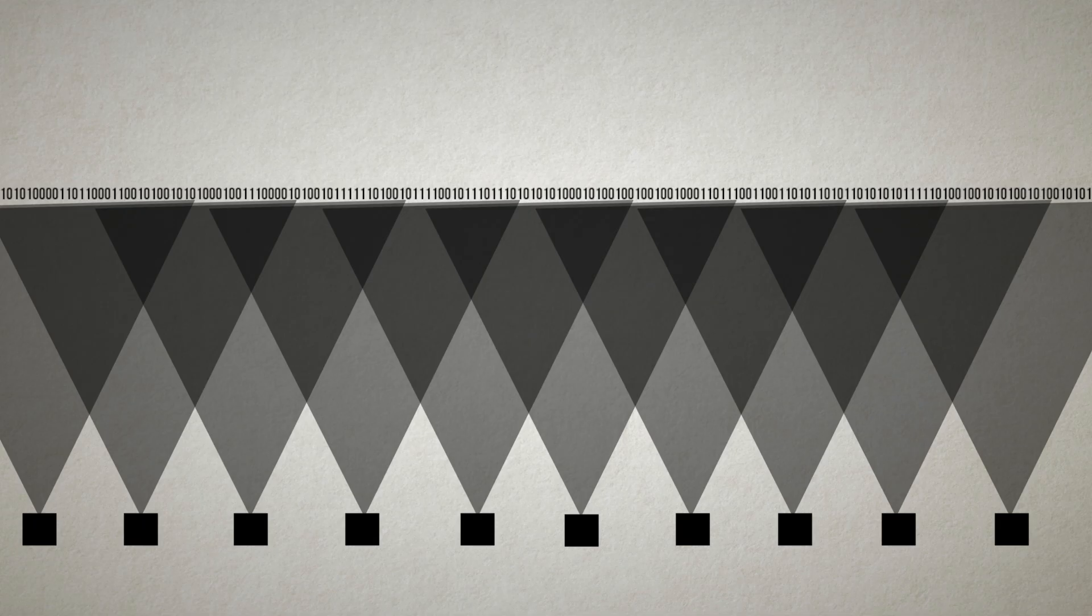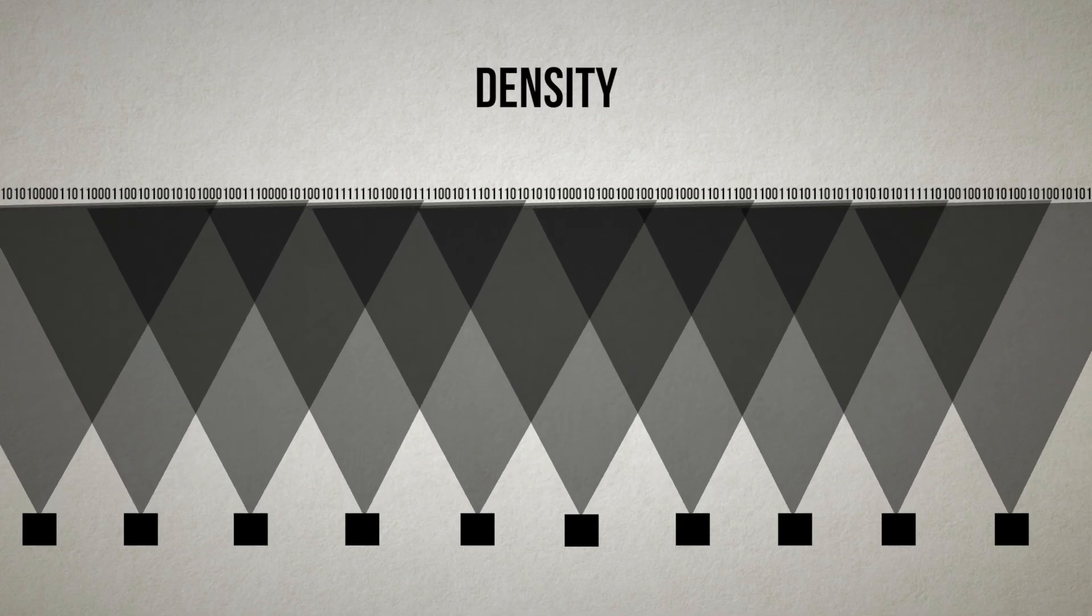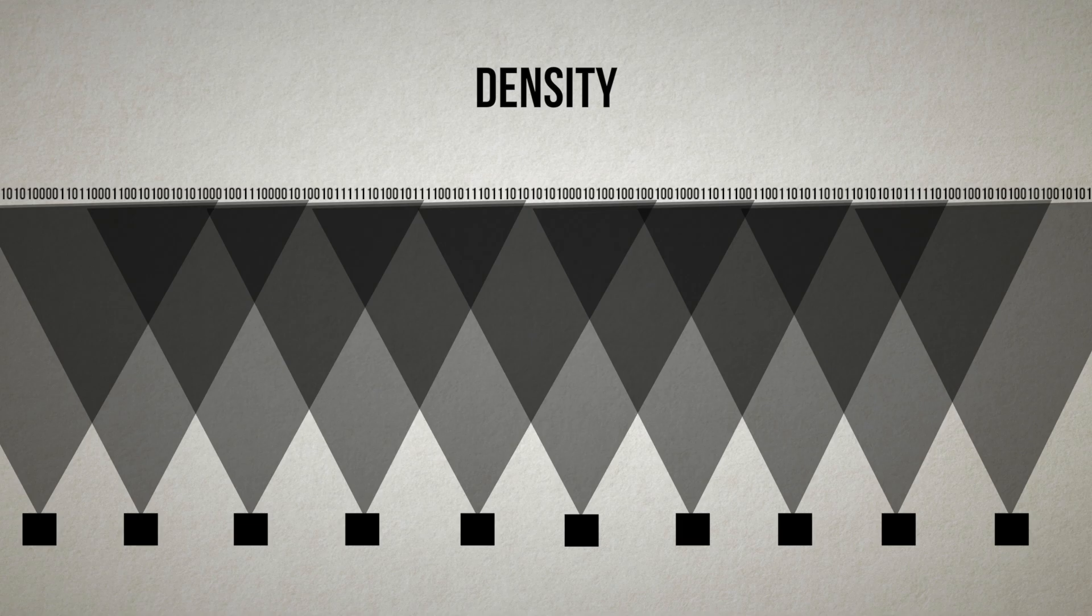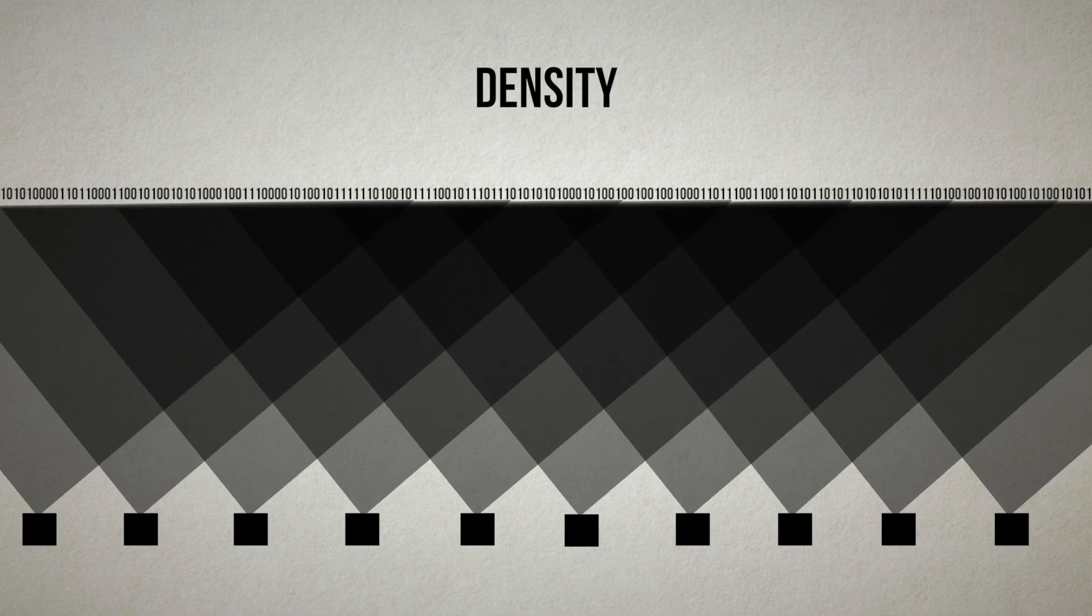Gallagher realized that we need an amount of overlap that is large enough to protect each bit well but not so large that the correction problem becomes very complex. He measures the amount of overlap by something he calls the density, that is how densely the message bits are connected to the parity check bits.